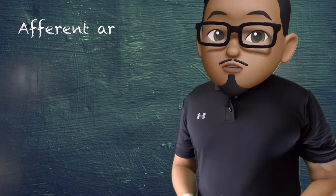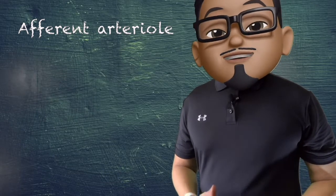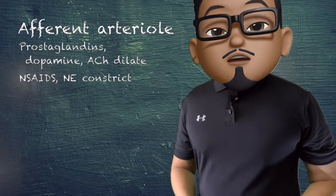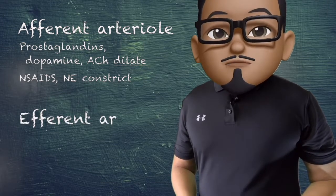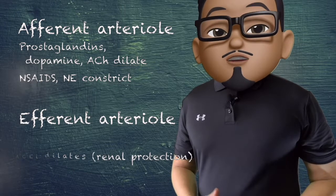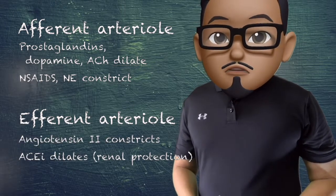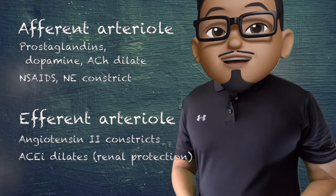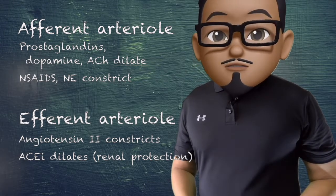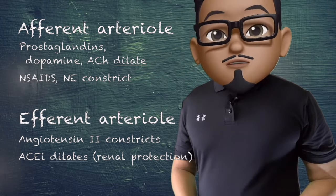Certain compounds affect the afferent and efferent arterioles. Prostaglandins, dopamine, and acetylcholine will dilate your afferent arteriole, while NSAIDs or norepinephrine will constrict it. Angiotensin II will constrict your efferent arteriole, while ACE inhibitors will dilate the efferent arteriole, decreasing your glomerular filtration rate and proteinuria, thereby preventing further renal damage.